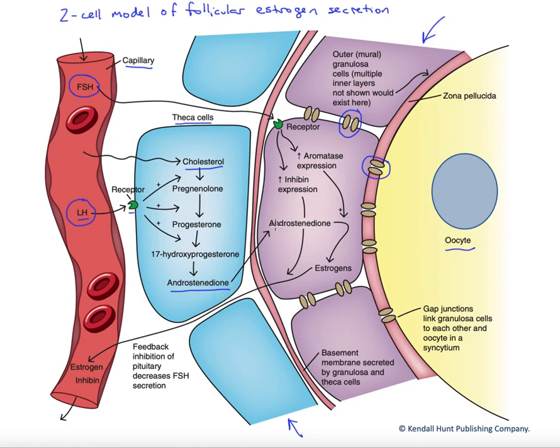That will be taken up by the granulosa cells across the basement membrane and converted to estrogens. To do so requires FSH, as FSH acts on those granulosa cell receptors shown here and increases aromatase expression. Aromatase is the enzyme that converts androgens to estrogens. Here we have it acting on androstenedione, generating estrogens, which will be taken back up into the bloodstream.